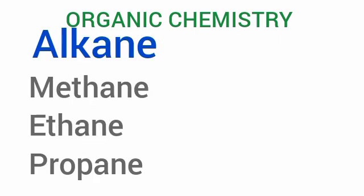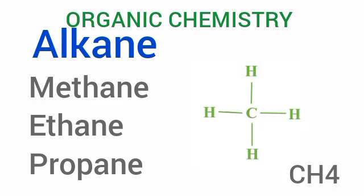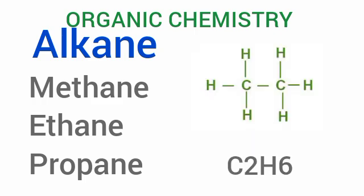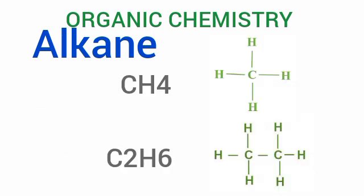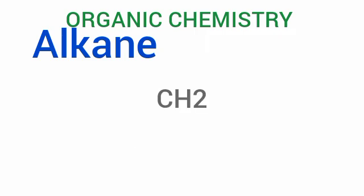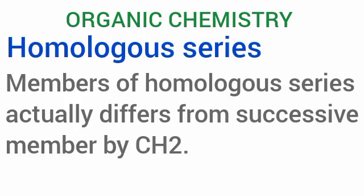Let's take a look at the alkane homologous series. The first member is methane, the second member is ethane, the third member is propane. From the structure of the first member — CH₄ — and the second member, ethane — C₂H₆ — you can see the difference is CH₂. Members of a homologous series differ from their successive member by the formula CH₂.